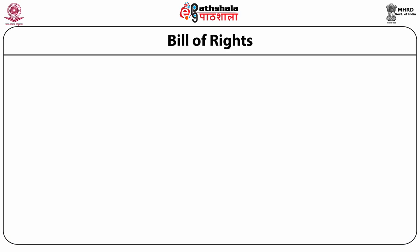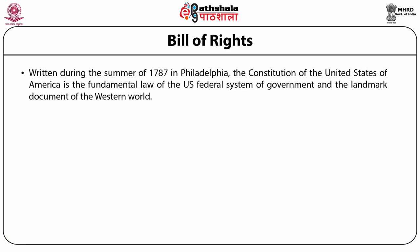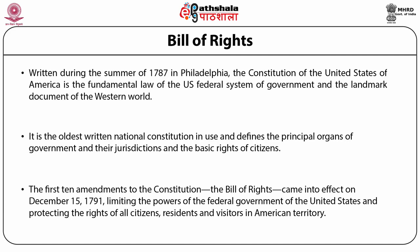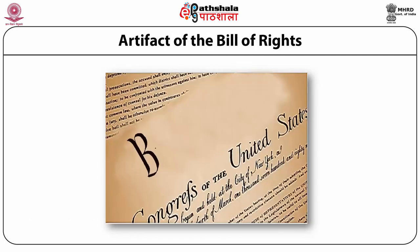Written during the summer of 1787 in Philadelphia, the Constitution of the United States of America is the fundamental law of the US federal system of government and is the landmark document of the Western world. It is the oldest written national constitution in use, making the United States the oldest democracy. The US Constitution defines the principal organs of government, their jurisdiction, and the basic rights of citizens.